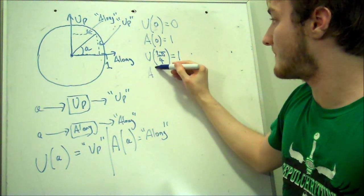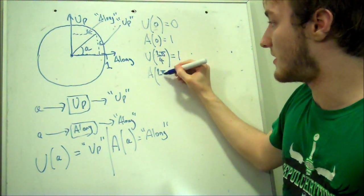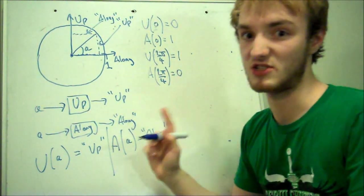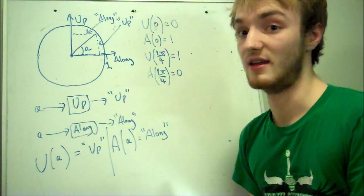And the along machine for two pi over four is going to give us nothing. Because if it's pointing straight up, it's not along in any direction.